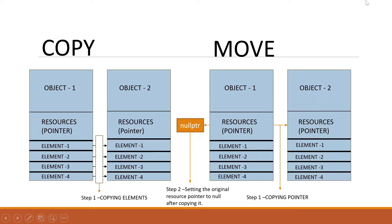In the move operation, we do not perform deep copy — we perform shallow copy. In shallow copy, we don't perform the element-by-element copy. We simply copy the pointer address of the memory to object two. By that way, we do not copy elements individually. It is more memory efficient because we do not need to create copies of the elements.